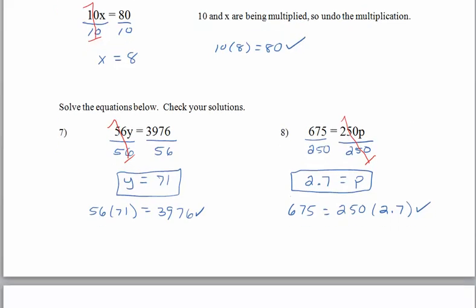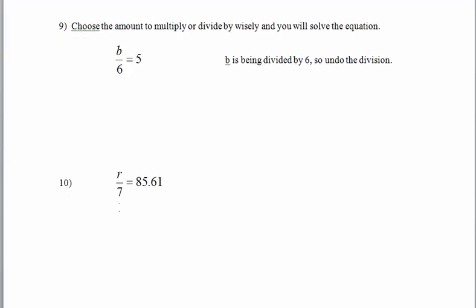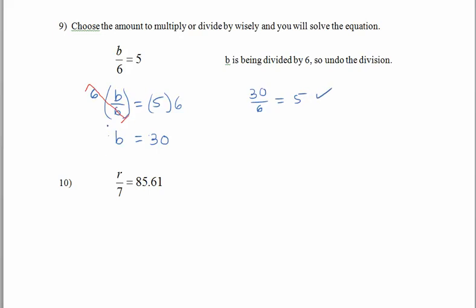This time we're looking at a division. B is being divided by 6, and the result is 5, so we want to undo the division. B divided by 6 is equal to 5. To undo dividing by 6, we will multiply by 6 on both sides. The 6 and divided by 6 cancel to give 1, so B is all by itself. 5 times 6 gives us 30. It's really worthwhile to check: does 30 divided by 6 give us 5? Yes, it confirms our answer.